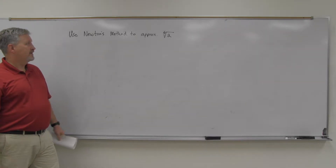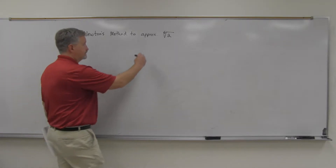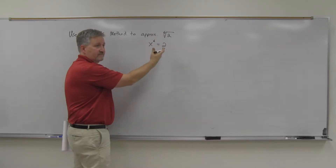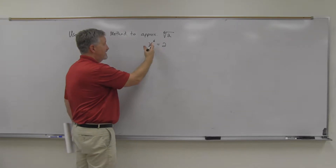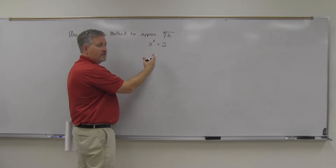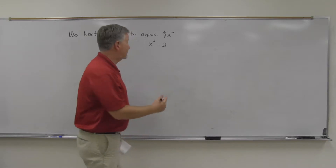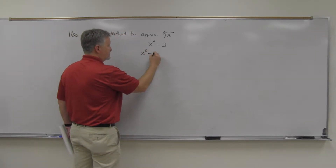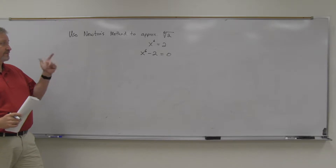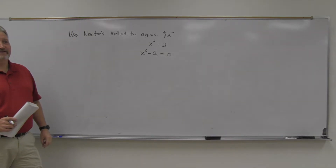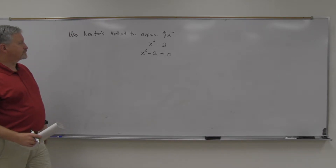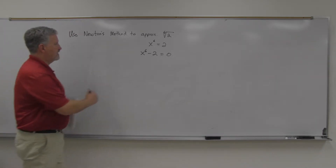Think about what equation would have that as its solution. If I had x to the sixth equals two, the sixth root of two would be the solution to that. But for Newton's method, one side needs to be zero, so the actual function is f(x) = x⁶ minus 2. That's the appropriate equation for Newton's method, so you just have to convert your root to an equation.